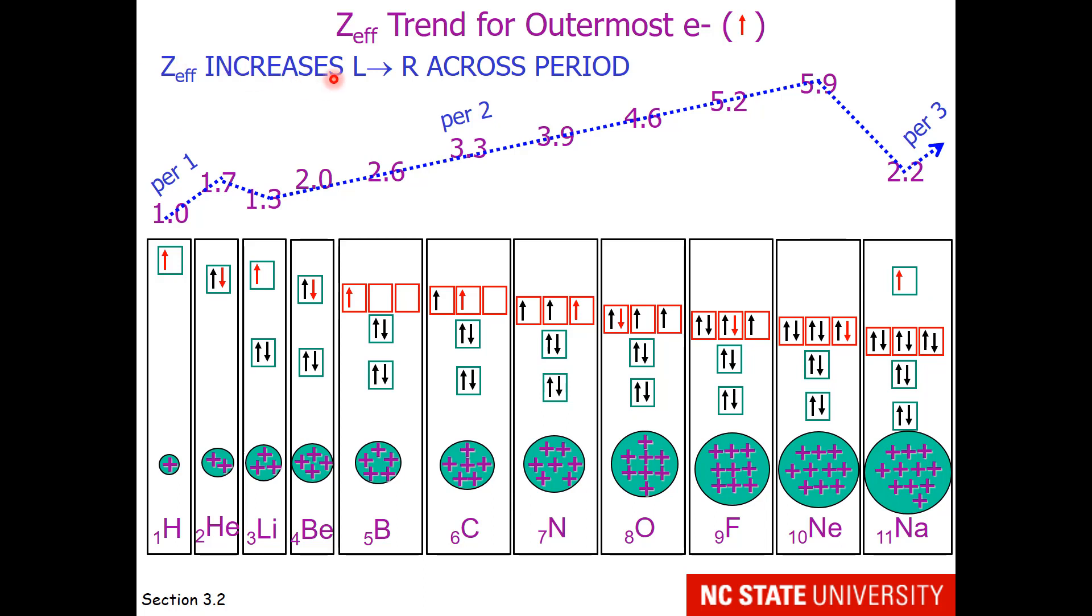Z_eff increases from left to right across a period. Across the first period it increases, then across the second period it increases, and I will show you a slide soon that shows you it increases across the third period. It's always increasing. The only thing it does is as we start a new row, it drops back a little bit. If we look at the atoms that are in the same group in the periodic table—like hydrogen, lithium, and sodium—notice that Z_eff increases down the group.